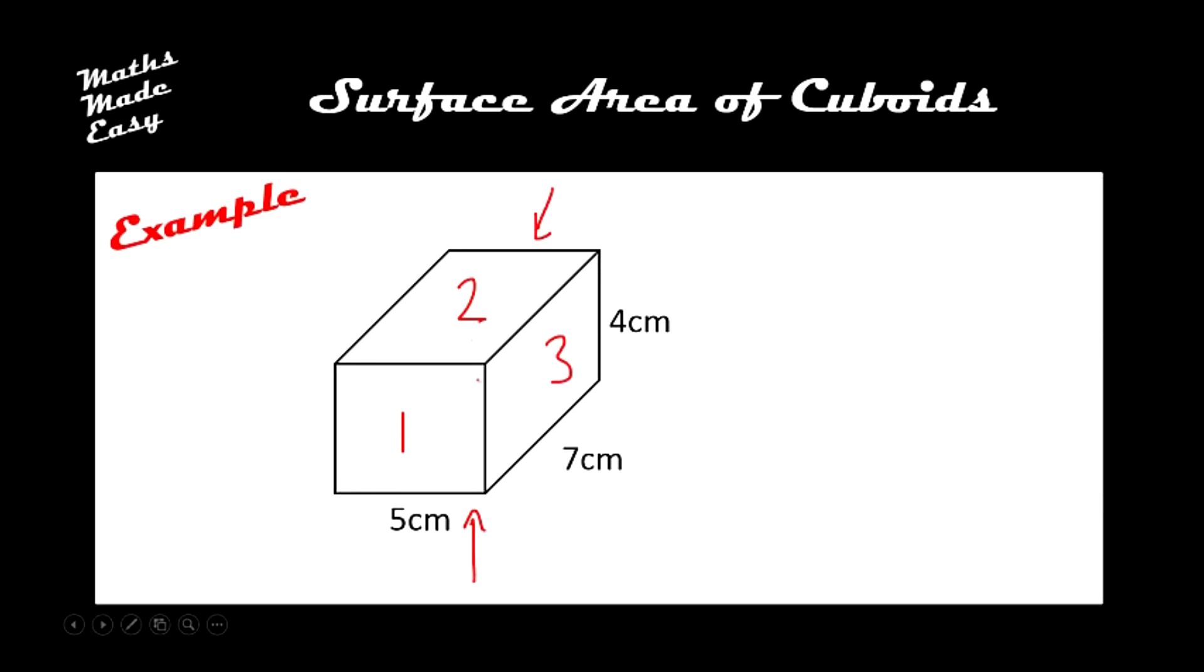There's the one on the bottom underneath there, which we know is the same shape as 2, and then there's the final face, the sixth one, on this left hand side, and we know that's exactly the same rectangle as 3 here, because they're opposite.